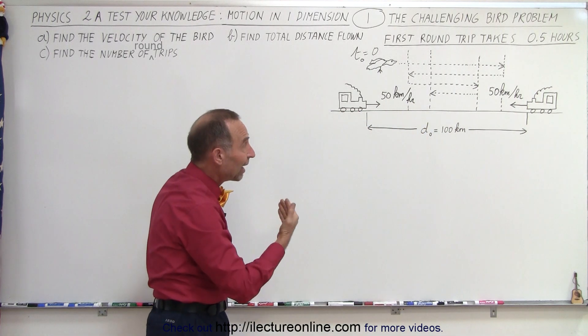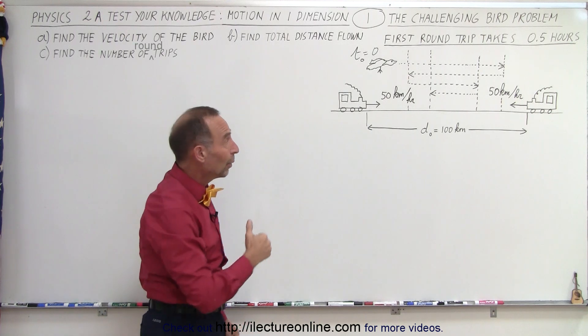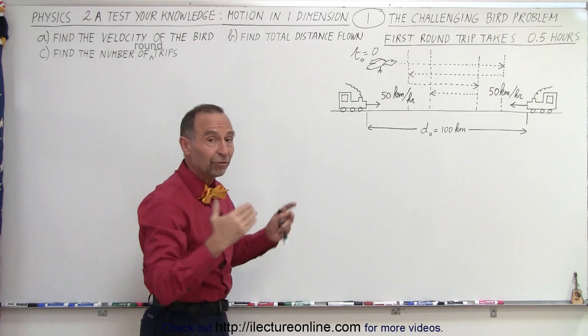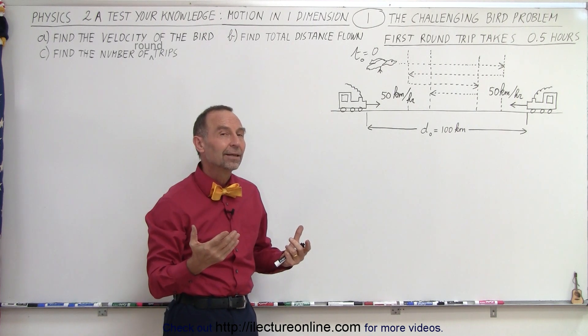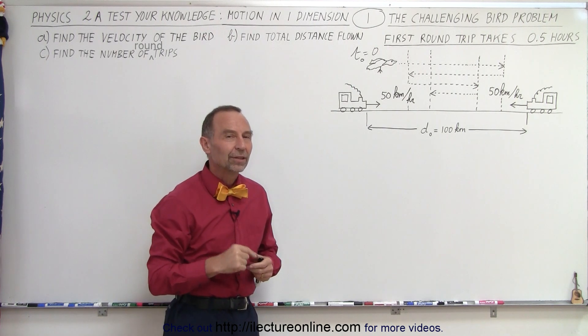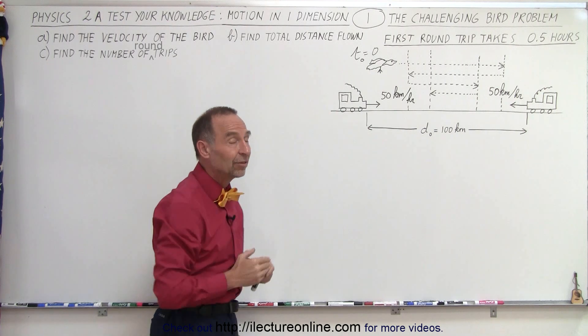So the idea is how fast does the bird fly? What is the total distance the bird has flown by the time the two trains meet? And finally, how many round trips did the bird make before the trains come together?